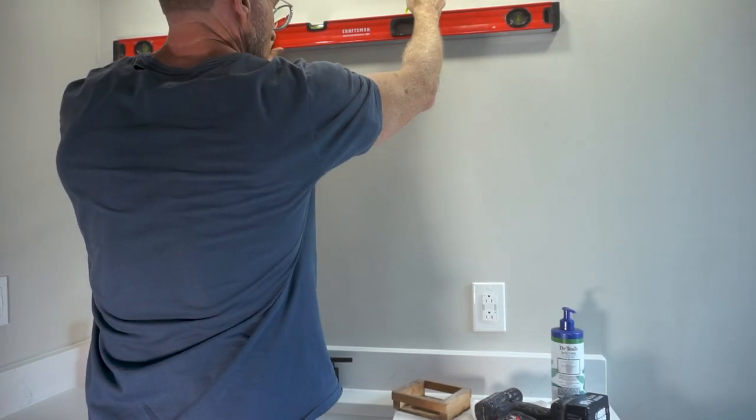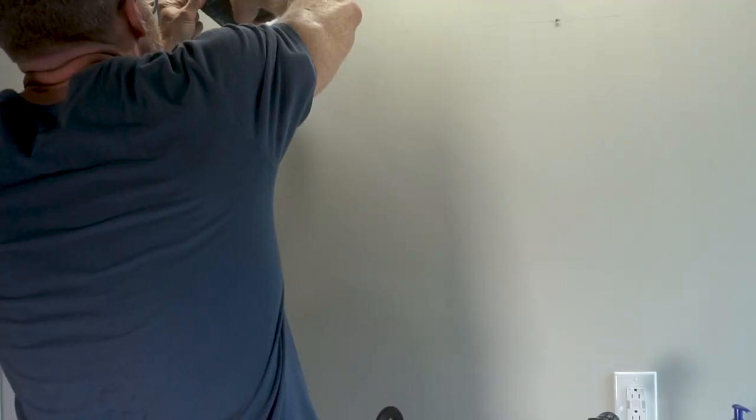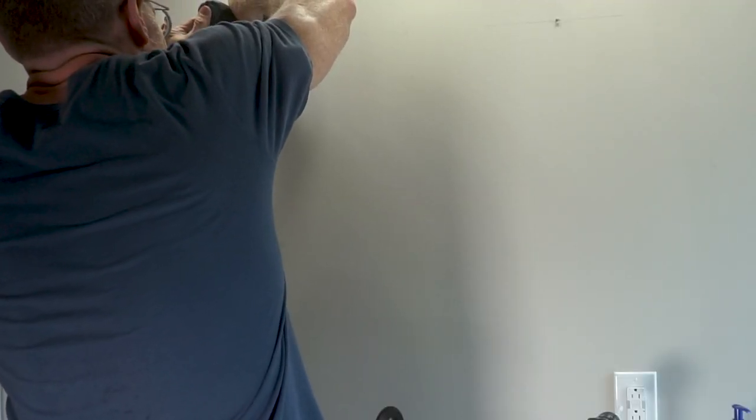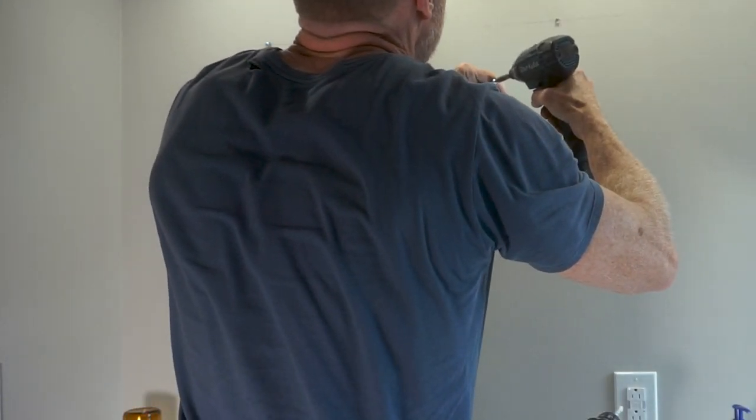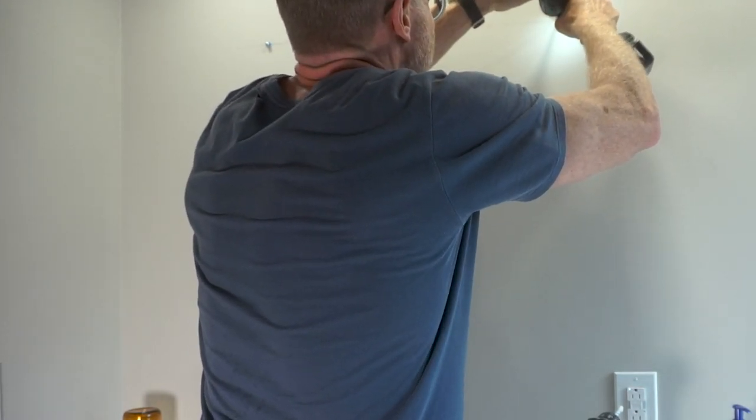Next, I'll install the mirror over the vanity. In an earlier video I mentioned that I used old work electrical boxes for the outlets. That's so that I could center the mirror over the vanity and then have the two outlets positioned symmetrically around the center point of the mirror.